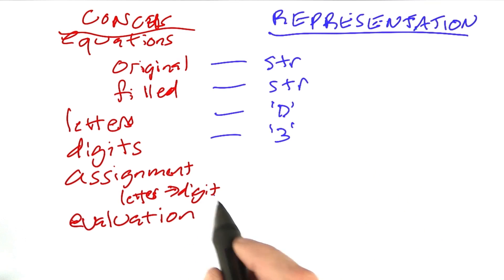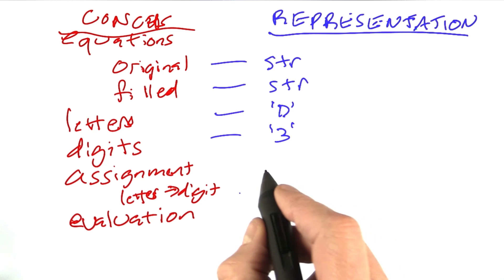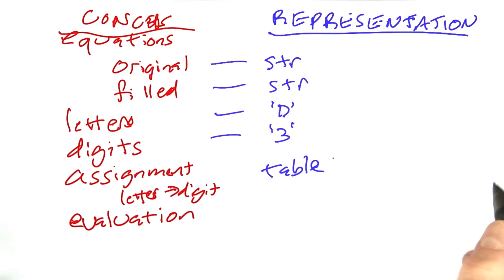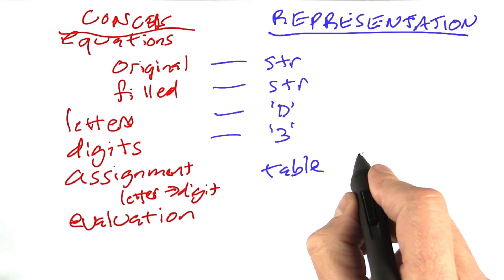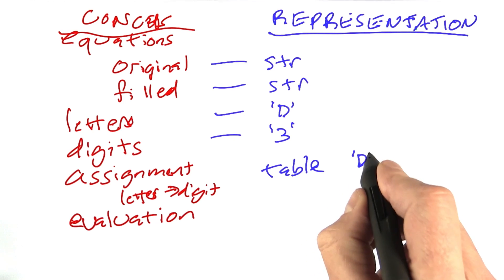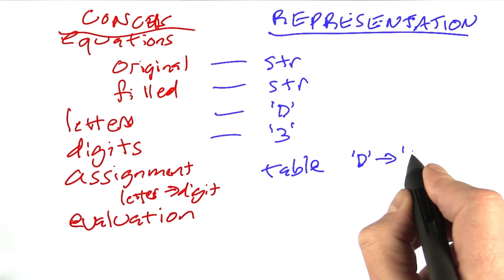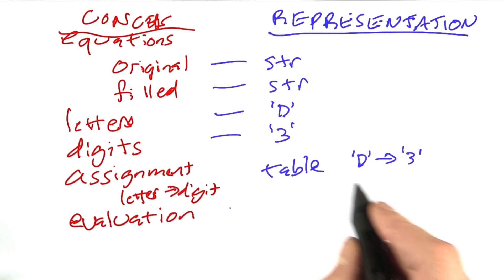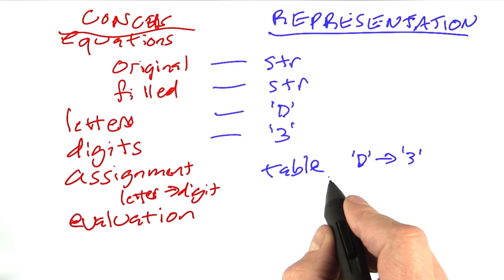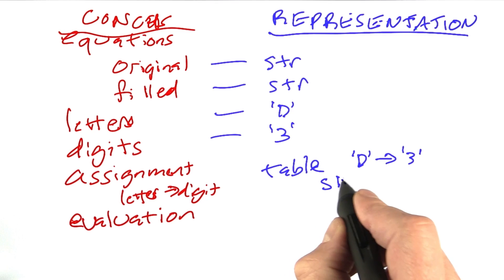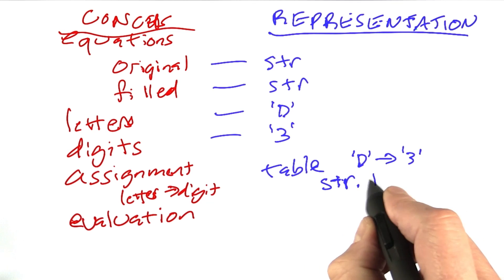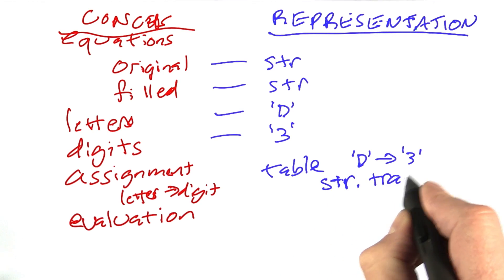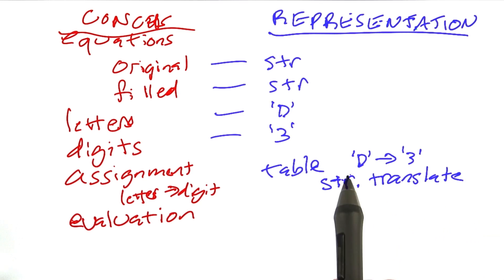The assignment of letters to digits will be some sort of a mapping or a table that consists of this type of mapping that says D would be replaced by 3 and so on. And it turns out that there is a facility built into Python that's part of strings called the translate function. So we can call the string.translate method in order to enact that type of assignment or substitution.